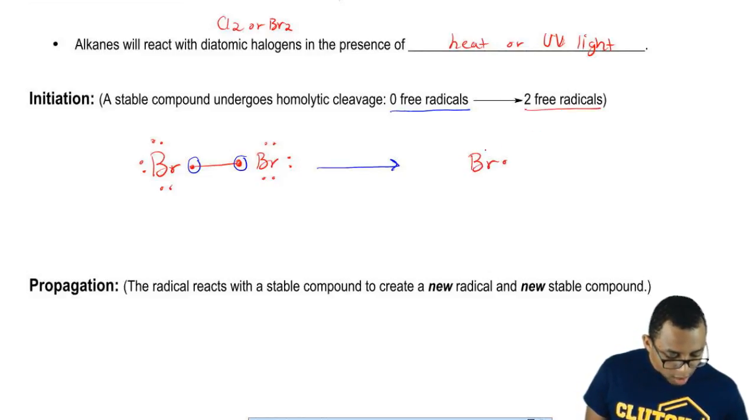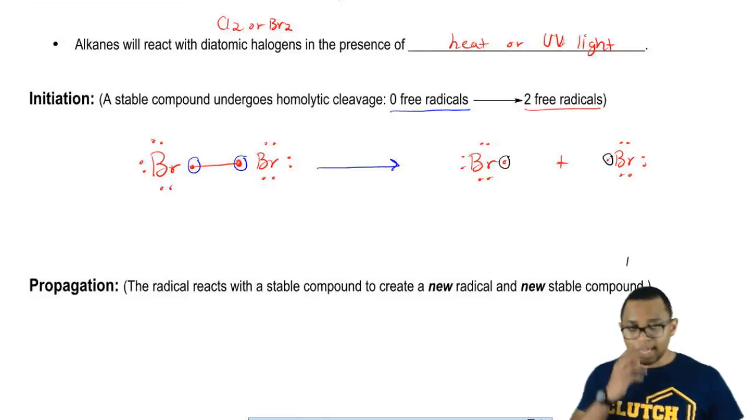What's a radical? A radical is when you have an electron that is not paired, it's just a lone electron. Where's our radical electron? This is our radical electron and this is our radical electron.